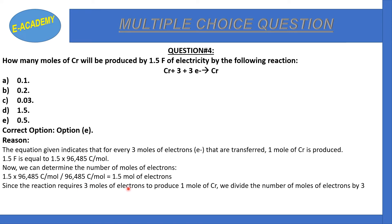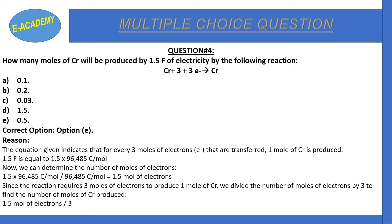Since the reaction requires 3 moles of electrons to produce 1 mole of chromium, we have 1.5 moles of electrons ÷ 3 = 0.5 moles of chromium. Therefore, 1.5 Faraday of electricity produces 0.5 moles of chromium.